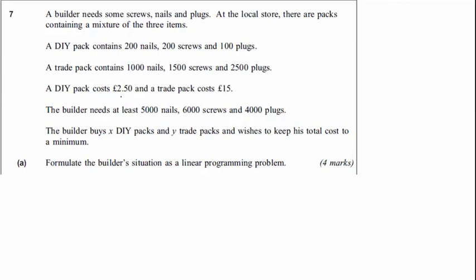This line tells you that the DIY pack costs £2.50 and a trade pack costs £15. You're also told how many nails, how many screws and how many plugs the builder needs. Importantly, the builder is going to buy X amount of DIY packs and Y amount of trade packs, and aims to keep the total cost to a minimum. These are the decision variables — X and Y — and every inequality or equation you come up with will involve a certain amount of X and a certain amount of Y. The first part of the question asks you to formulate the builder's situation as a linear programming problem, and this is what we'll deal with in this video.